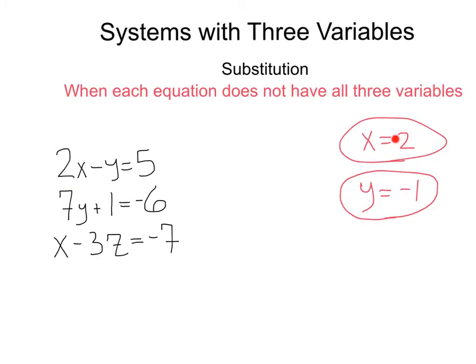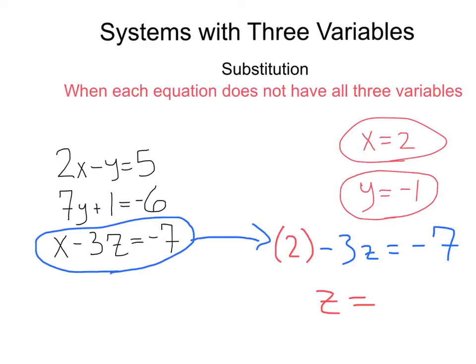Alright, back to the drawing board. We've got x equals 2, y equals negative 1. Is there any possible way to solve for z? Well, what if we took our third equation, x minus 3z equals negative 7, and plugged in our x value? Genius!